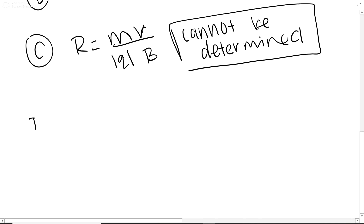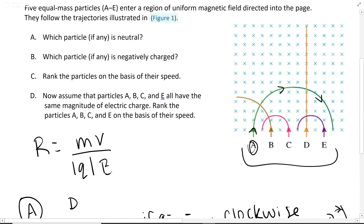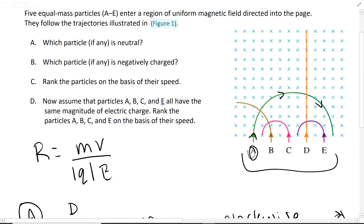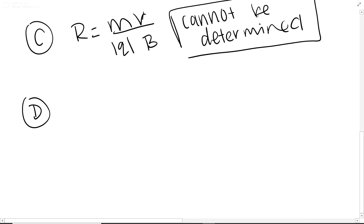And then the last one is D. Now this is to rank them assuming that the charge is equal. A, B, C, and E. We're not looking at D because that has no charge. Now they're telling us the charge is equal, so we're going to go ahead and rank those.